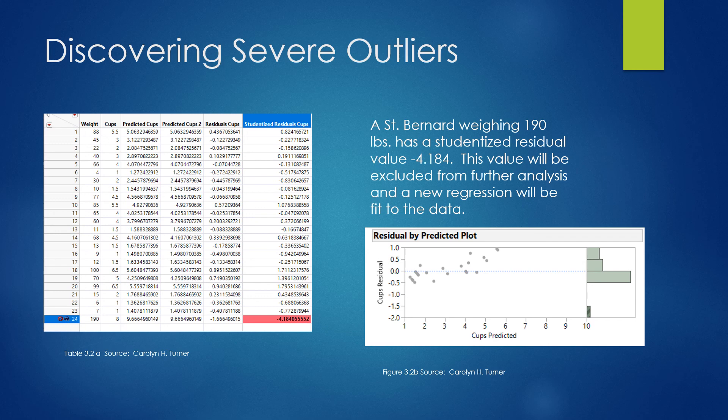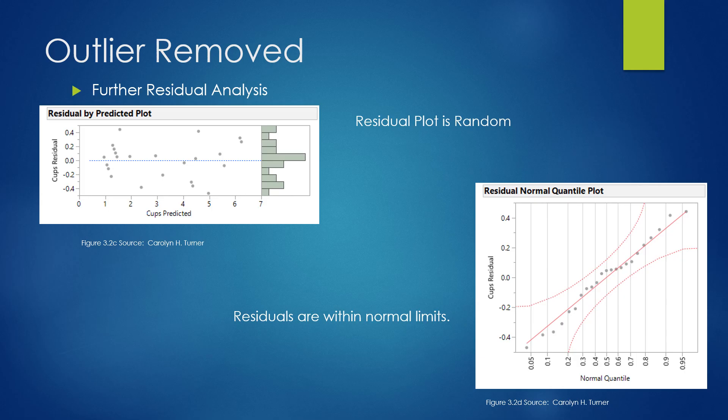When I discover that severe outlier, I go into jump and right-click on that item number, 24, and I ask it to hide and exclude that record. Then I rerun the data and I get the predicted cups too, which is going to be a better model with a smaller standard error, therefore better predictions.